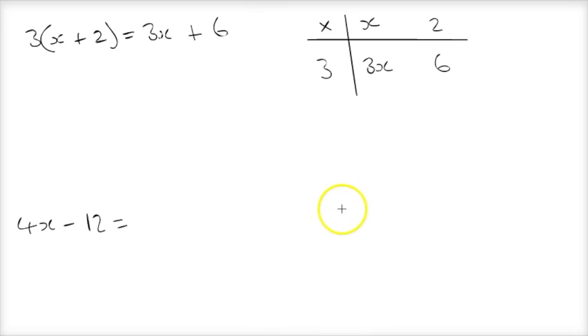So with this particular one, we thought of it as reversing a grid method. We put our 4x and our minus 12 in those positions.